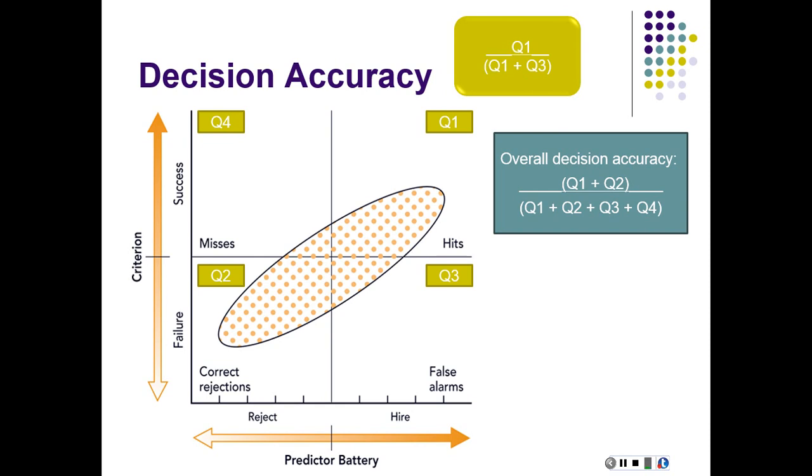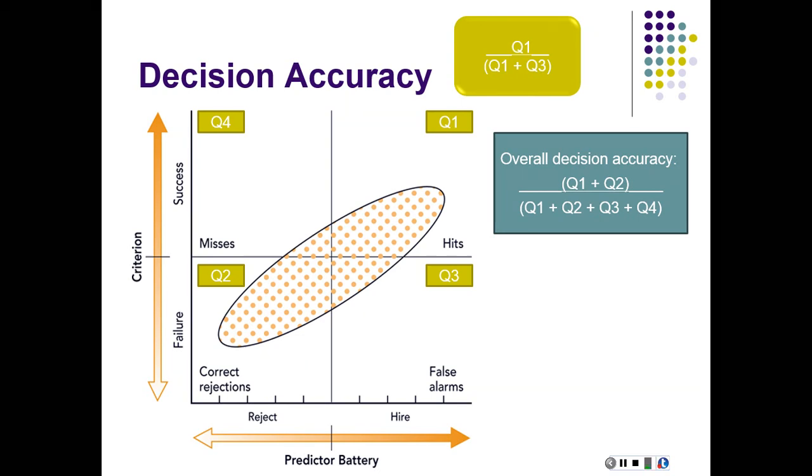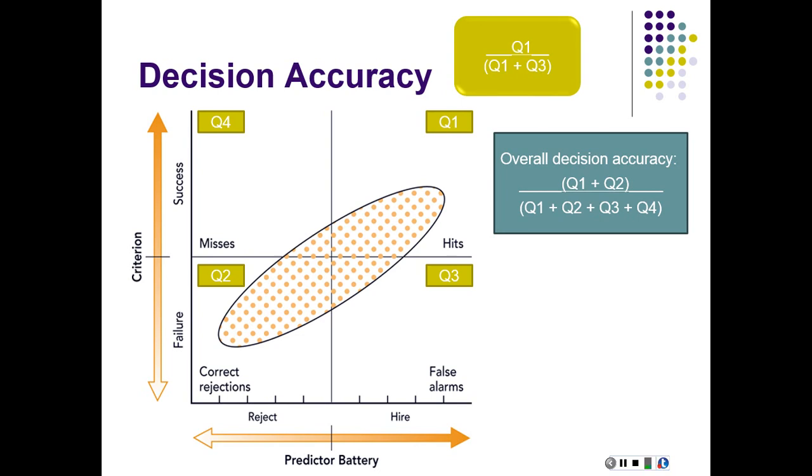Overall decision accuracy takes into consideration all the applicants that were there. Accurate decisions would be anything in quadrant one and two, because you correctly rejected people who probably would have failed on the job and correctly hired people who were successful on the job. We sum those two quadrants up, and that becomes our numerator. You divide by the total number of applicants, those who fell into any of the four quadrants. That gives us insight into overall how accurate this predictor battery was in rejecting or hiring the appropriate person.